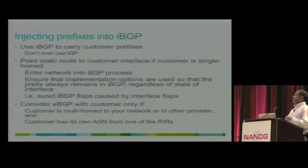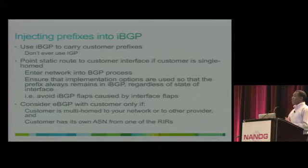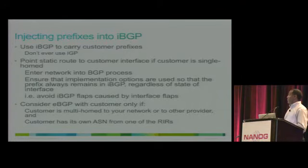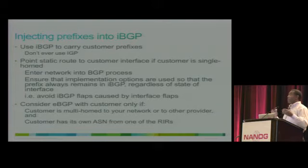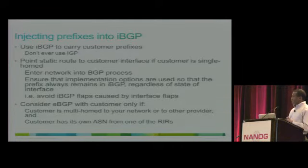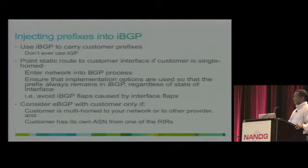If you want to inject customer routes as well as your own routes into BGP, you can use network statements. But when you redistribute into IBGP, you have to make sure that you are advertising aggregate prefixes — you don't want to advertise specific prefixes. Typically, you don't run BGP with your customers. But if you have a large customer peering with you at multiple locations, it's important to have BGP for that purpose, exchanging routes using BGP with the customer.